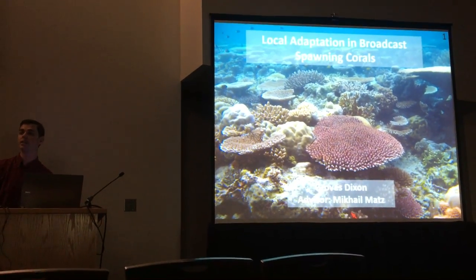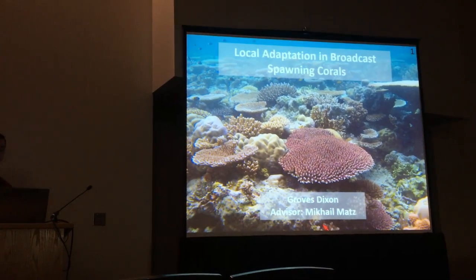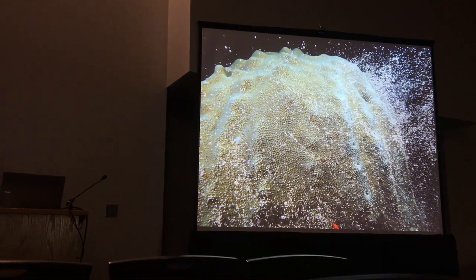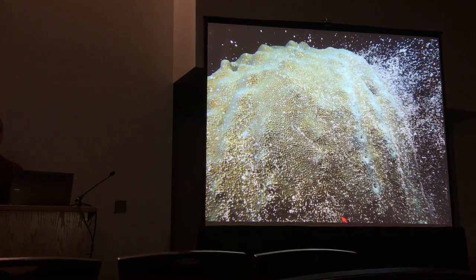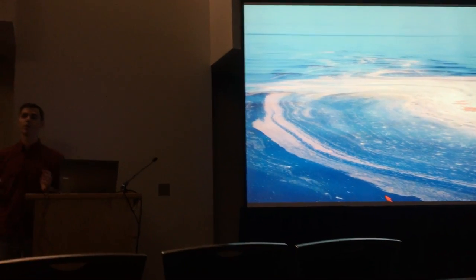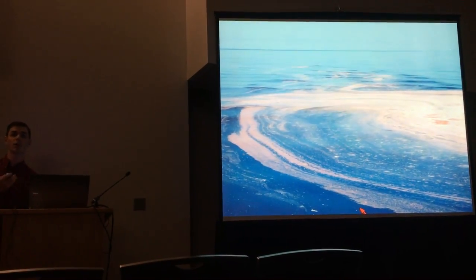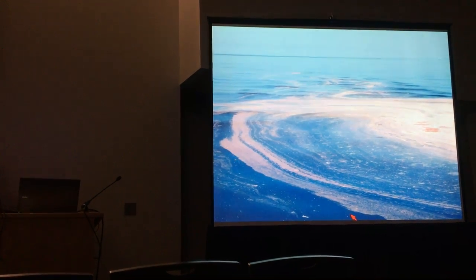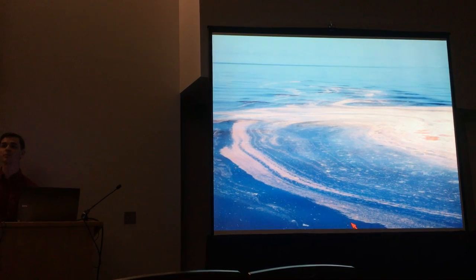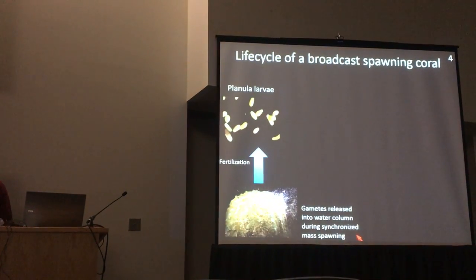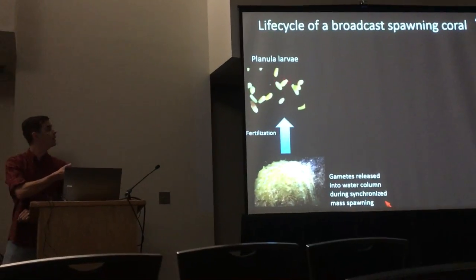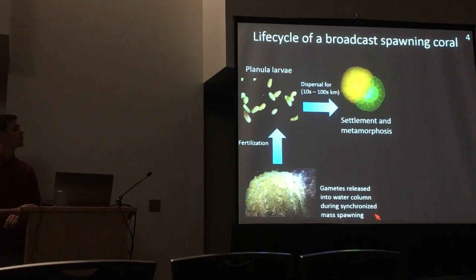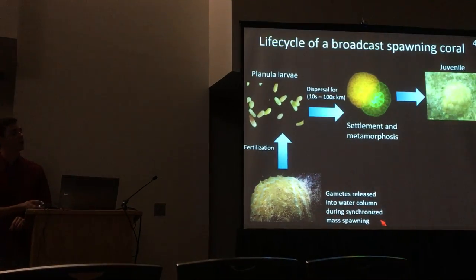I'm going to share some work done in the Florida Keys about local selection and broadcast spawning. This process begins with spawning — this is a colony of Meandrina cavernosa releasing gamete bundles into the water column. It does this in a mass spawning event synchronized by the lunar cycle, and the next morning you can see literally millions of eggs, sperm, and newly formed embryos forming a slick on the surface. Those embryos develop into the only dispersive stage the coral has: planula larvae, which float in the water column and can disperse tens to even a hundred kilometers.